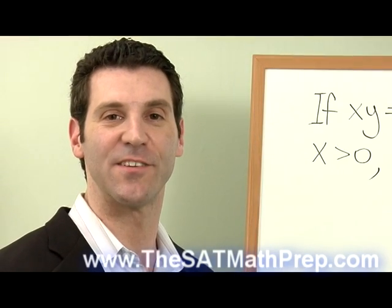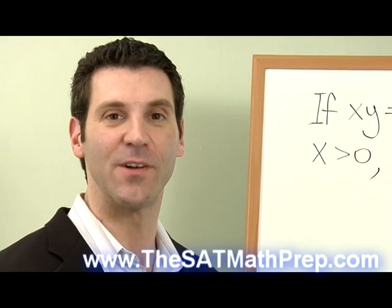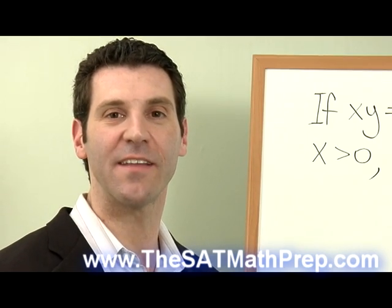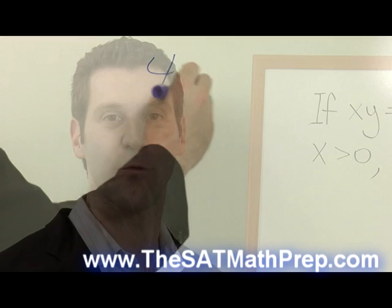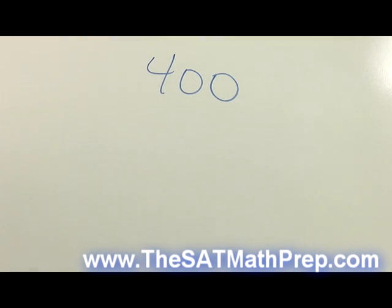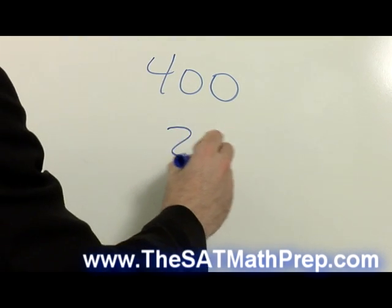Once you get enough practice with this type of problem, you can get the answer very quickly by multiplying the three numbers together to get 400, and then taking the square root of 400 to get 20.